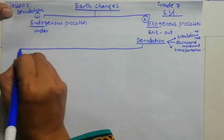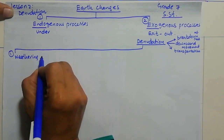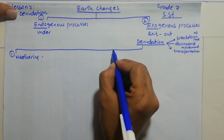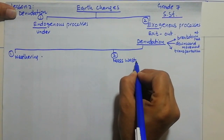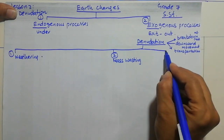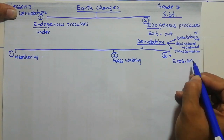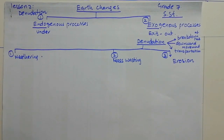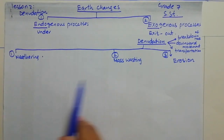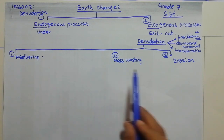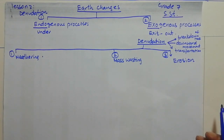Denudation is caused by three processes. One is weathering, the second one is mass wasting, and the third process in denudation is erosion. These three processes are actually interlinked, and now I'll explain how they are interlinked.